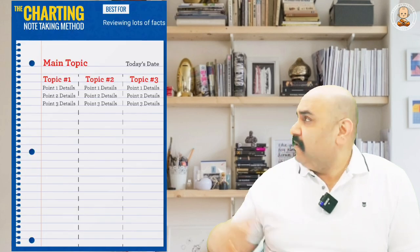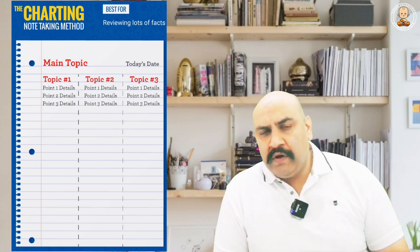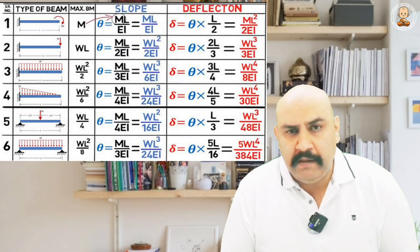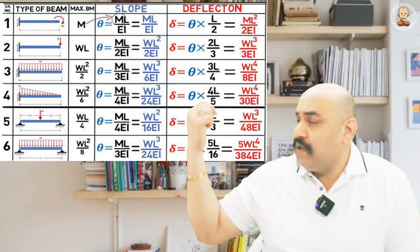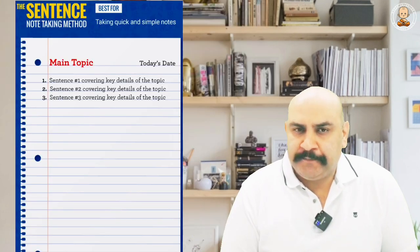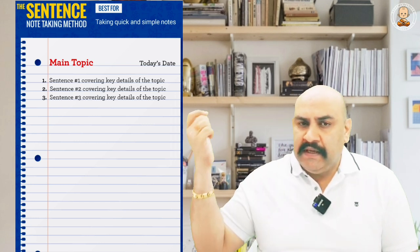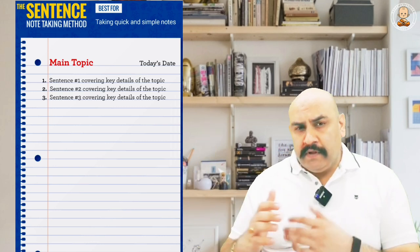The fourth one is the charting method. This method arranges data in columns, and it is most effective when you have to cover a lot of data and facts that are closely related to each other — helpful for comparative study. For example, shear force and bending moment relations, or deflection of different beam types like simply supported and cantilever beams. The fifth and last one is the sentence method, which is used when you have to make notes much faster. Each main topic is put in the form of a complete sentence. This method is preferred when time is limited.